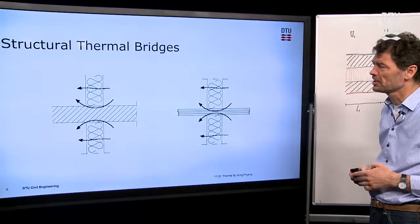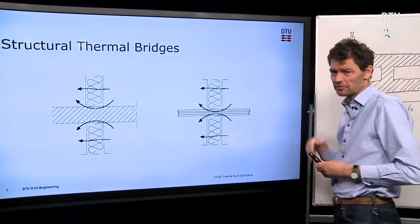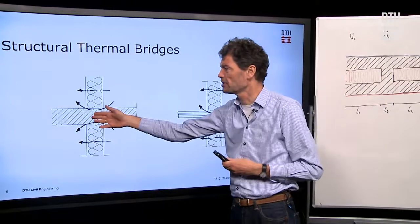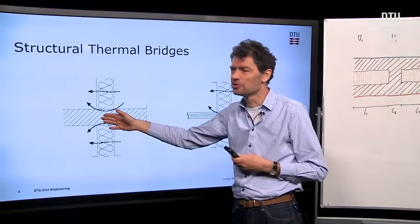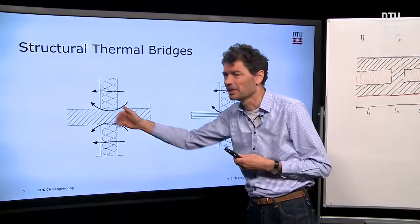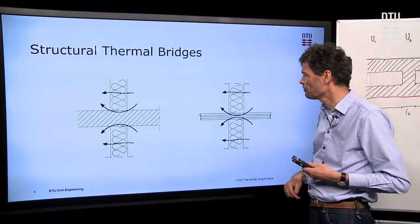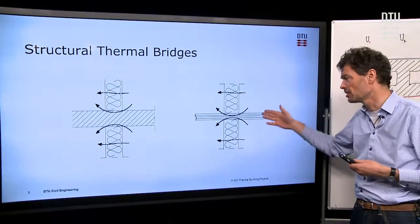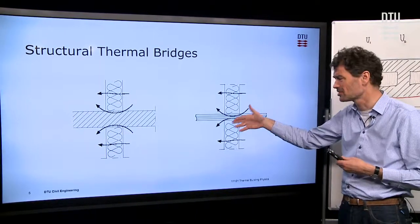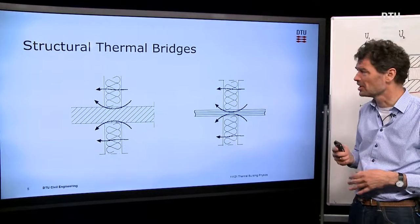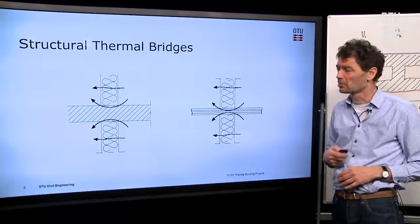The next type of thermal bridge is a structural thermal bridge. For structural reasons, you may have to have some passages through the insulation of structural elements. This could be for instance a balcony that is to be held somehow in a structure, or this could be a pipe or some other structural metal element that has to be led through the insulation.